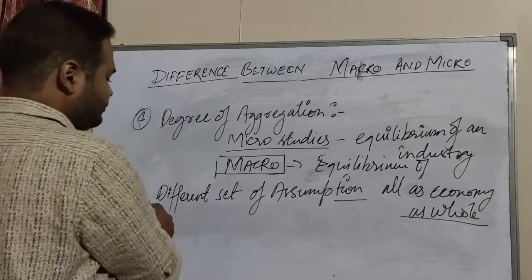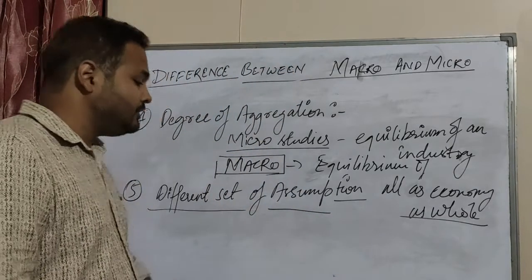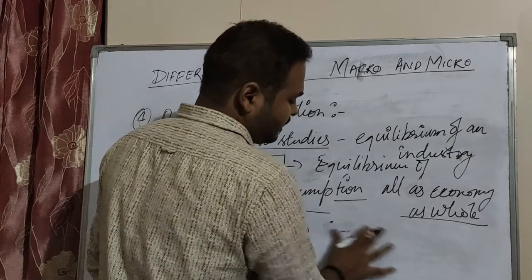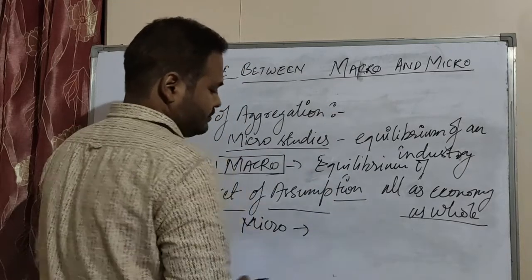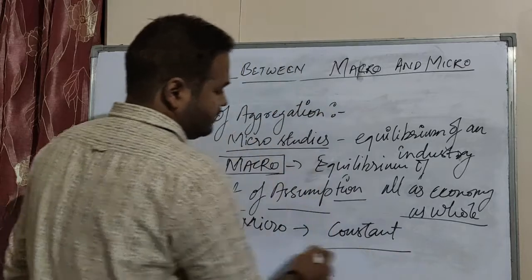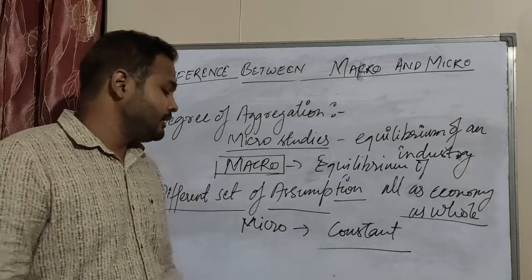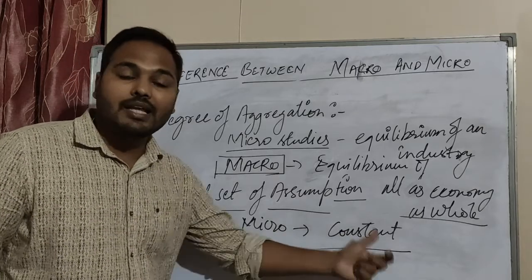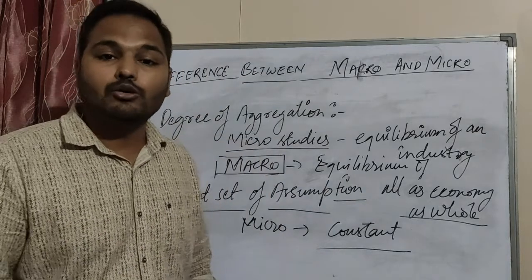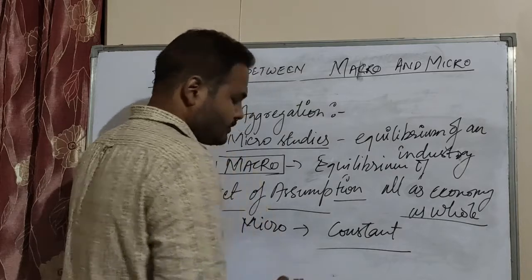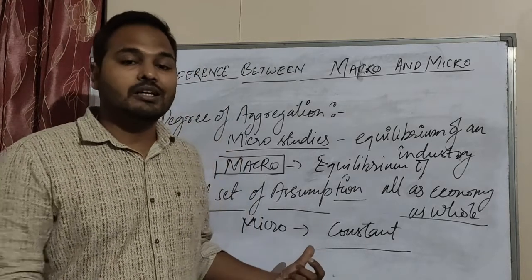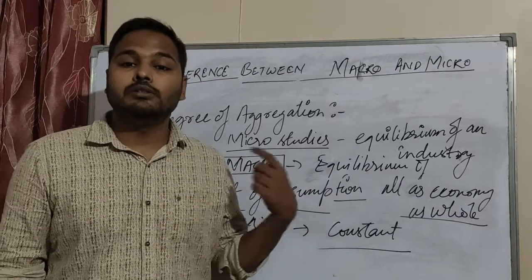The fifth point is different sets of assumptions. Different sets of assumptions means the variables which are taken as constant or assumed to be constant in microeconomics may not be constant in macroeconomics.